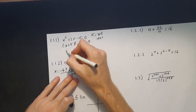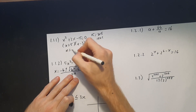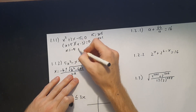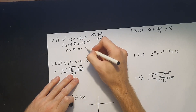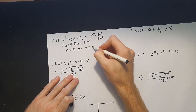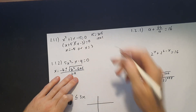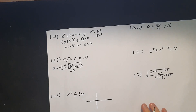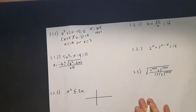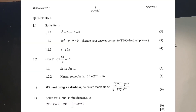Therefore x = −5 or x = 3. Now looking at 1.1.2, it says solve for x correct to two decimal places.